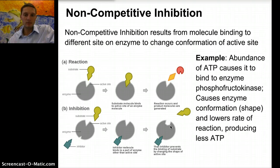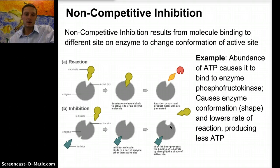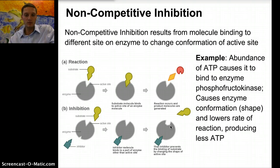A good example of noncompetitive inhibition is the abundance of ATP causing it to bind with an enzyme, changing the enzyme's conformation. This lowers the rate of the reaction and thus produces less ATP. So if there's lots and lots of ATP and more doesn't need to be produced, the ATP inhibiting the enzyme actually slows down the production to decrease the amount of ATP available.